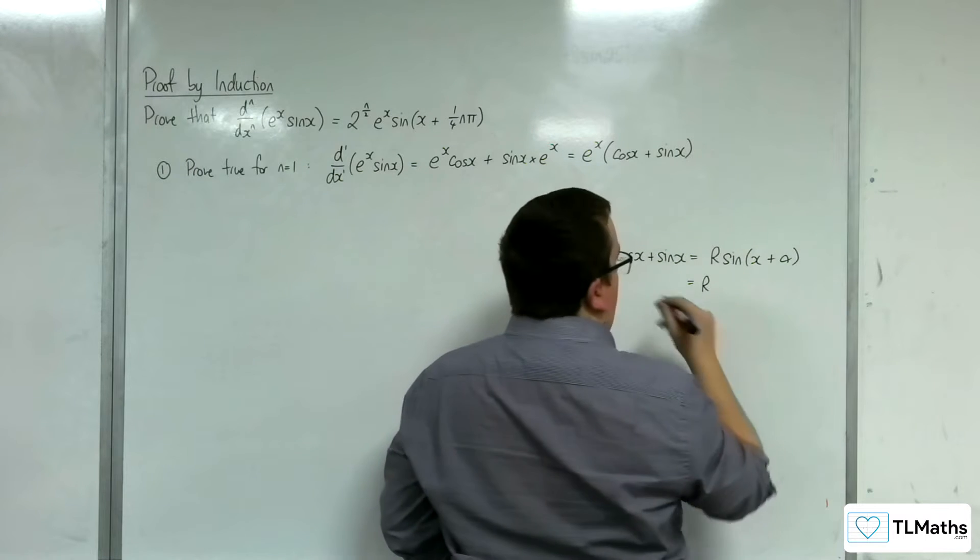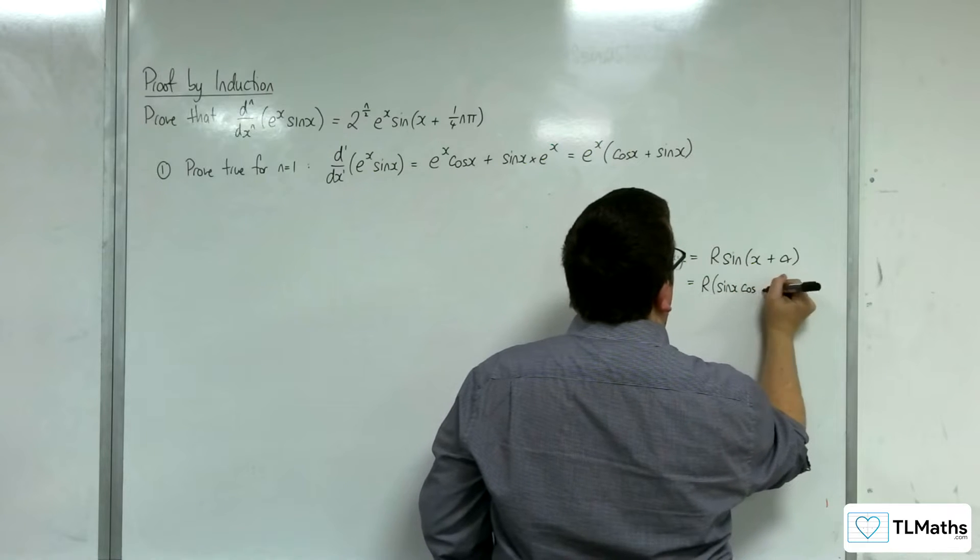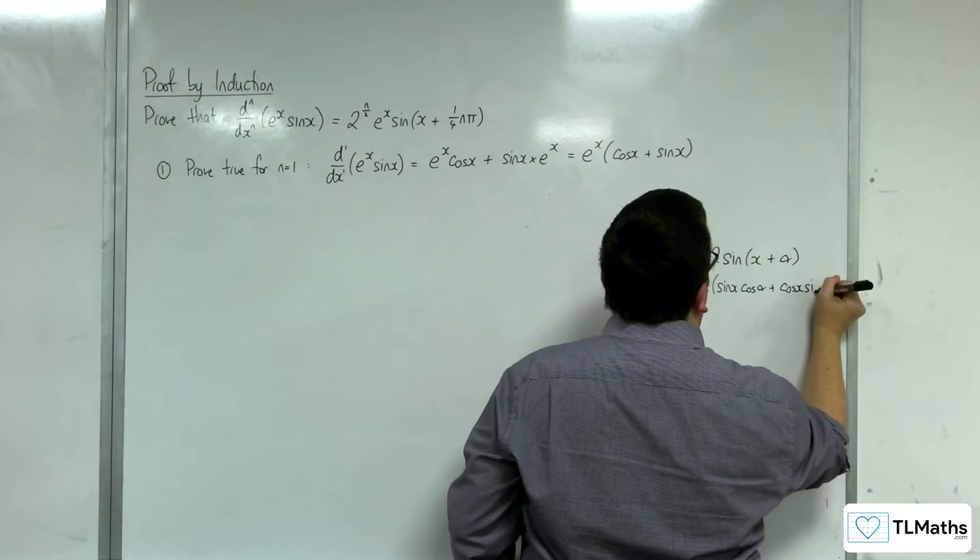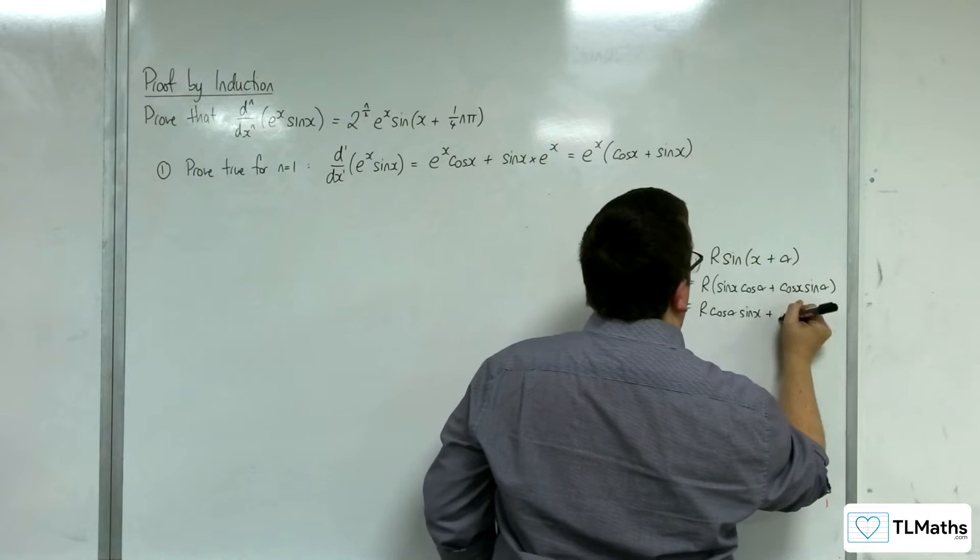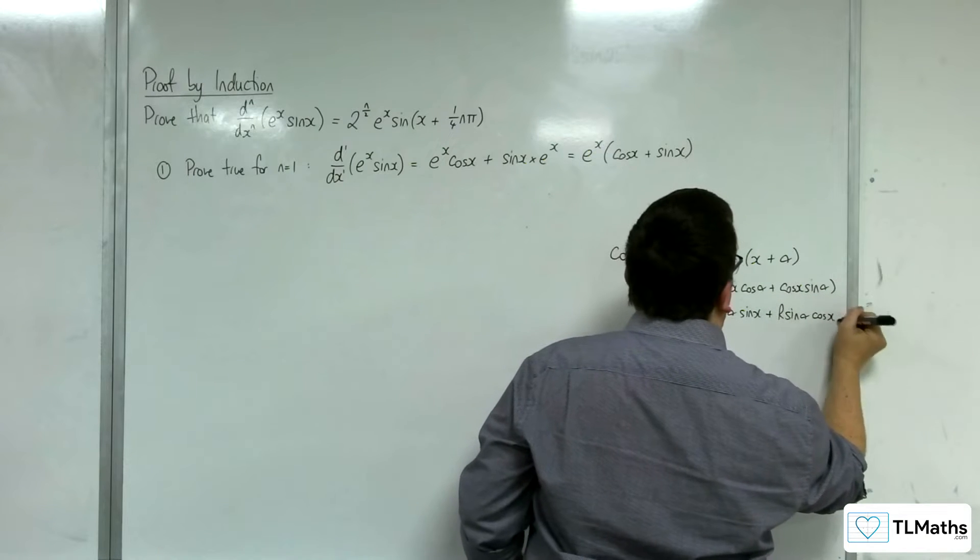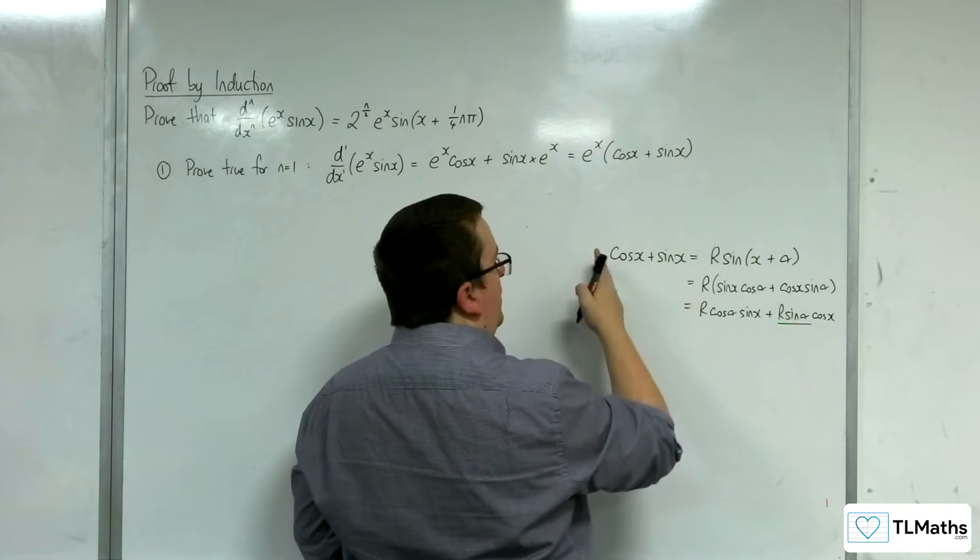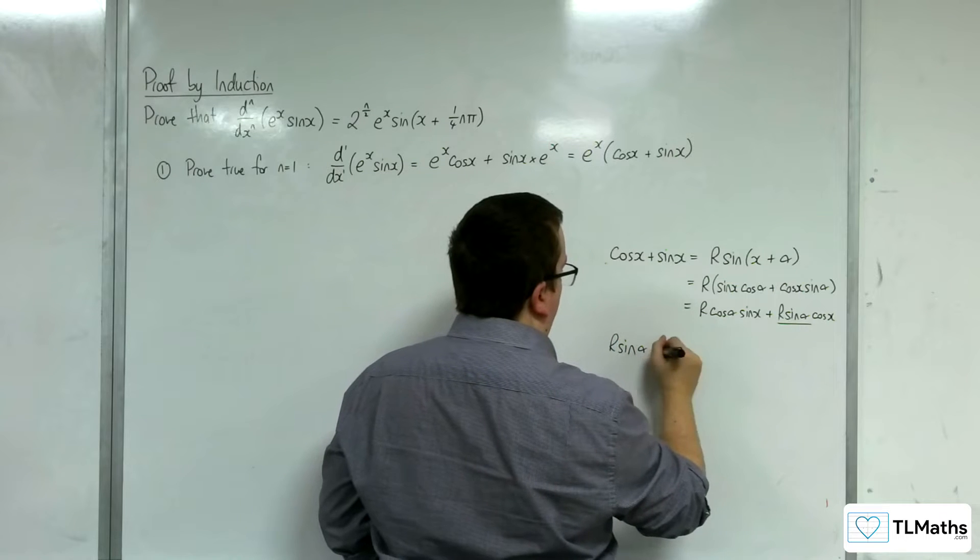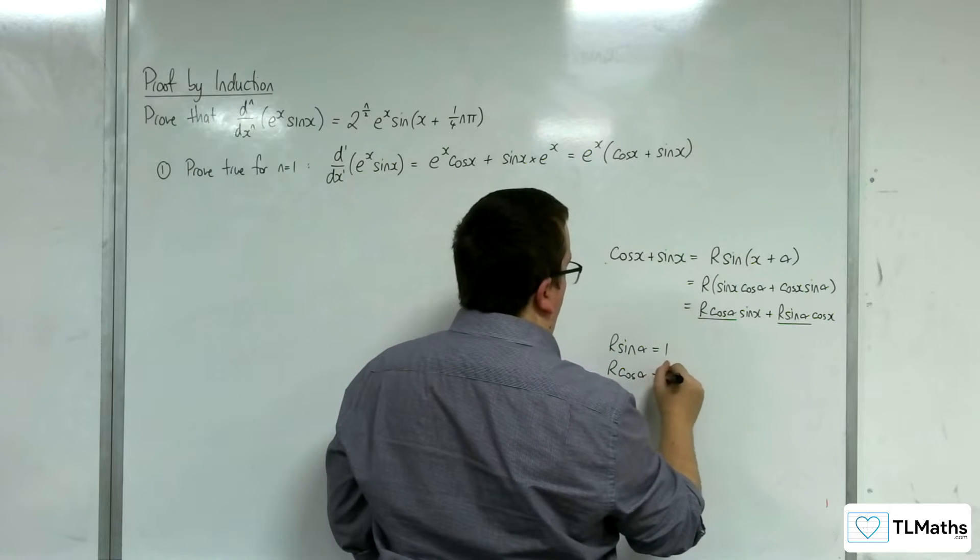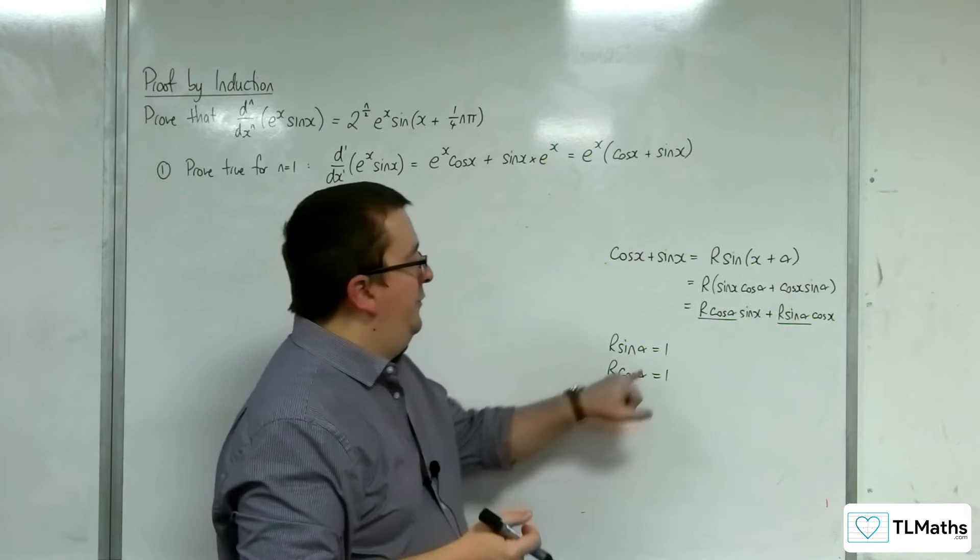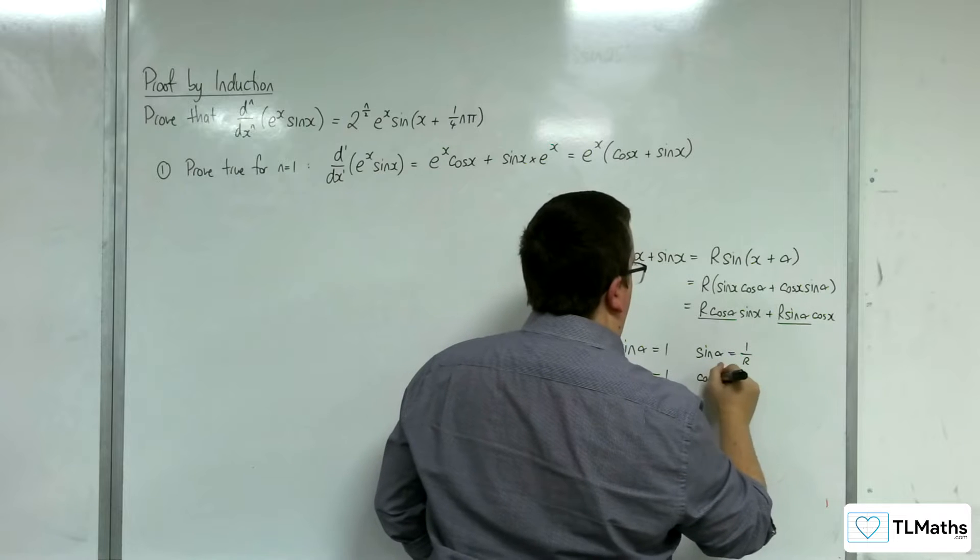So utilising the compound angle formula for sine, we have sine x cosine alpha plus cosine x sine alpha. So r cosine alpha sine x plus r sine alpha cosine x. So whatever's in front of the cosine must be the same. So we've got r sine alpha must be equal to 1. And whatever's in front of the sine x must be the same. So r cos alpha must be equal to 1. So sine alpha is 1 over r. And cosine alpha is 1 over r.